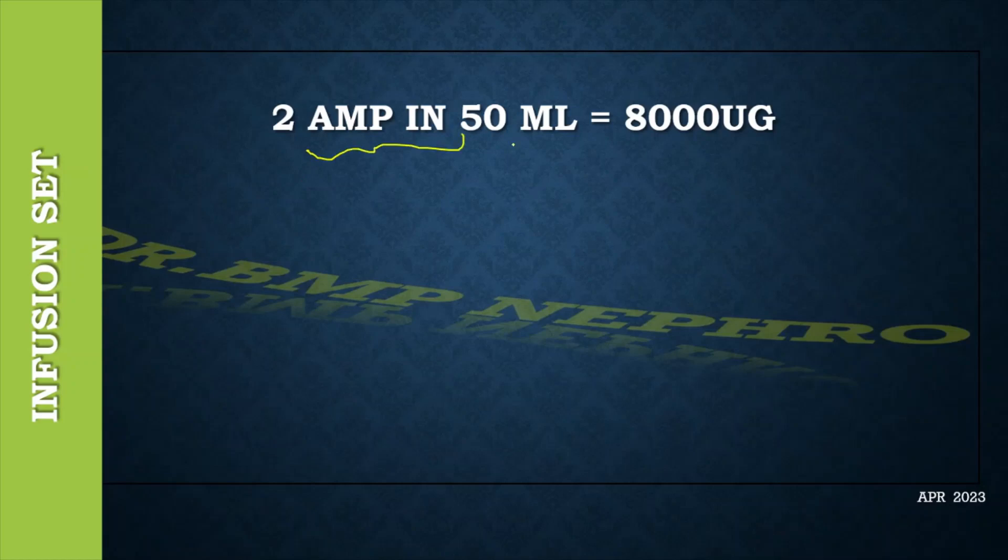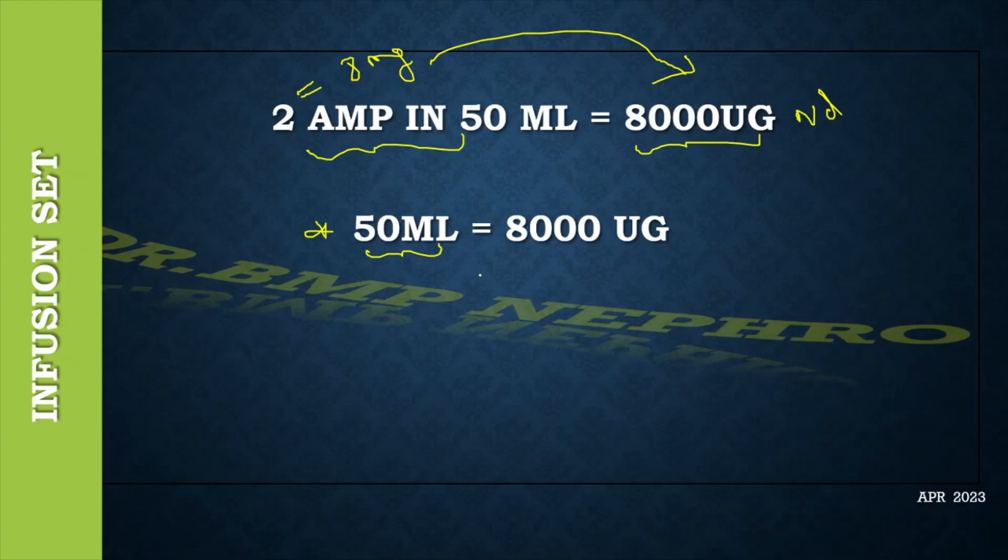2 ampoules in 50ml NS. Suppose if we take 2 ampoules, each ampoule contains 4mg, so total is about 8mg. 8mg is equal to 8000 mcg of noradrenaline. So 1ml brings this 50 to the other side approximately, 1ml is 160 mcg, 2ml is 320 mcg.